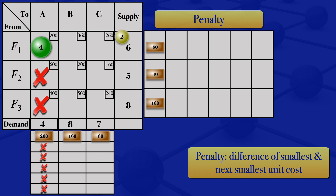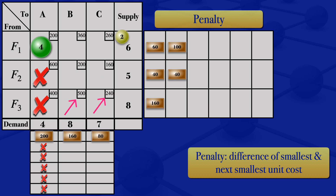Moving to the next step, we recalculate penalties excluding cells with allocations or crossed-out cells. For row F1, the two remaining unit costs give a difference of 100. For row F2, the difference is 40. For row F3, the difference is 260. For column B, the difference is 160. For column C, the difference is 80.